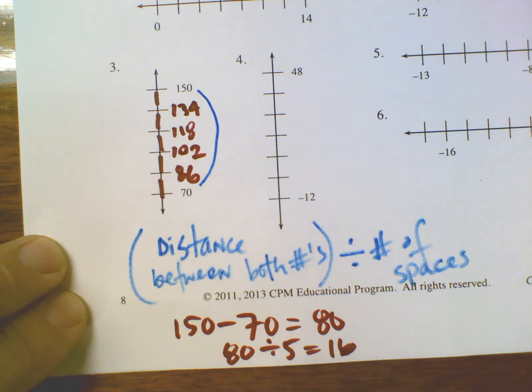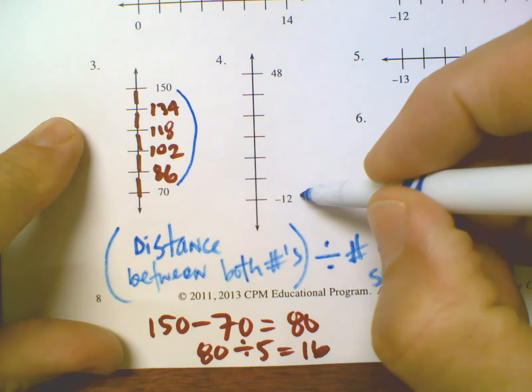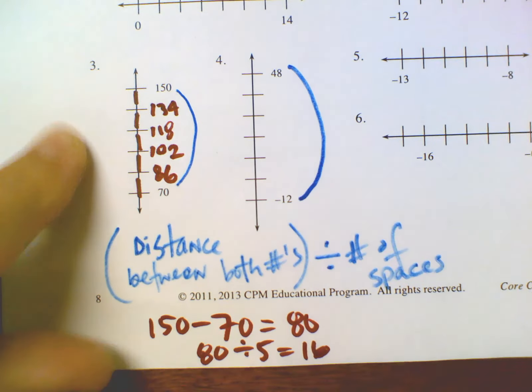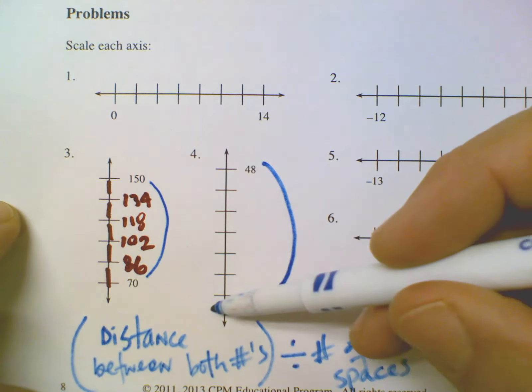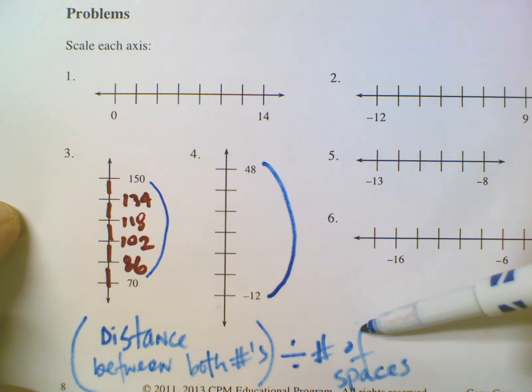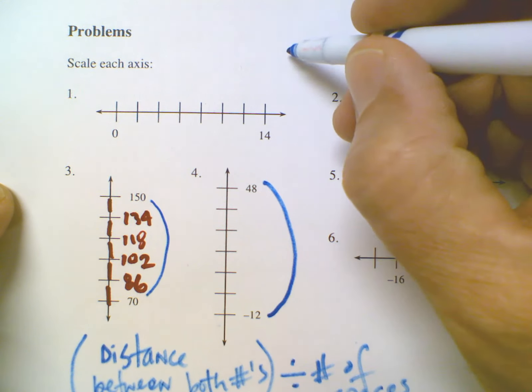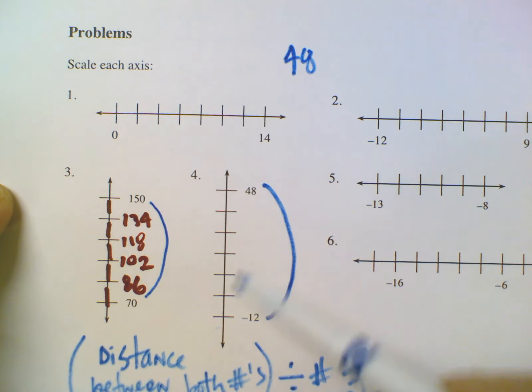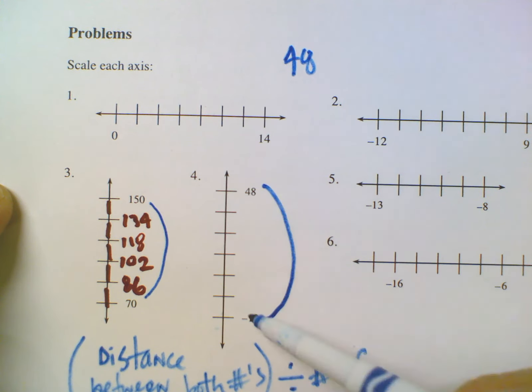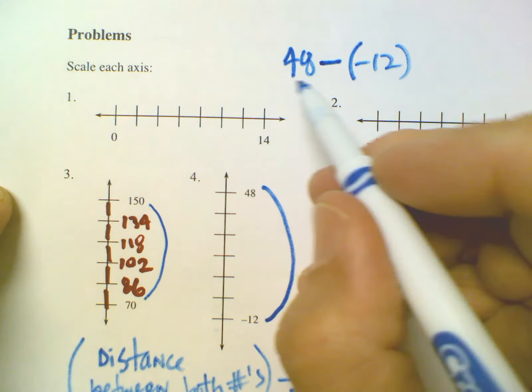Looking at number four, same process. First we're going to look at the space. Again, it's the distance between both numbers divided by the number of spaces. To find that distance, it's the larger number minus the smaller number. So 48 minus negative 12. When I subtract, 48 minus negative 12, that all becomes addition. Minus and negative is the same thing as plus, and that gives me 60.